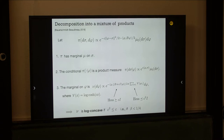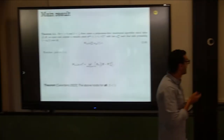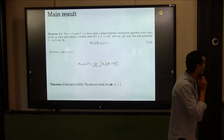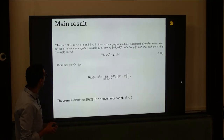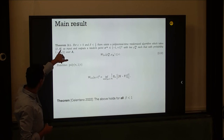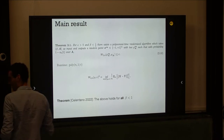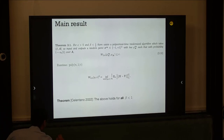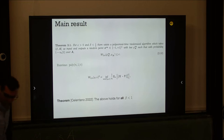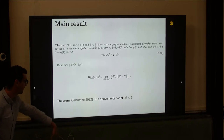This only works up to one fourth, but I want to go up to one. The main result says: for all epsilon and all beta smaller than one half, there exists a randomized algorithm taking inputs beta and A — the disorder matrix without beta — that outputs a random point close within epsilon in Wasserstein distance. The runtime is polynomial in N and one over epsilon.